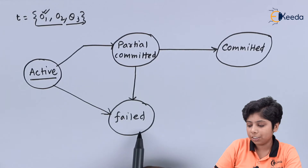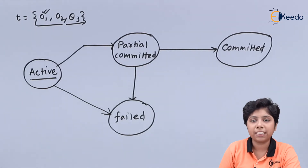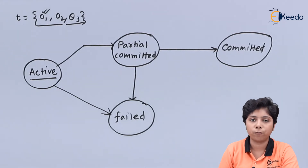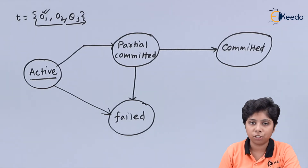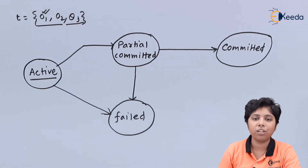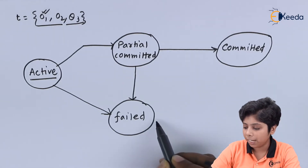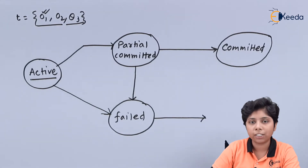A failed transaction can go to the aborted state when there is a hardware or software problem. If the problem lies within the logic of the transaction, we cannot restart that operation, so from the failed state the transaction goes to the aborted state.